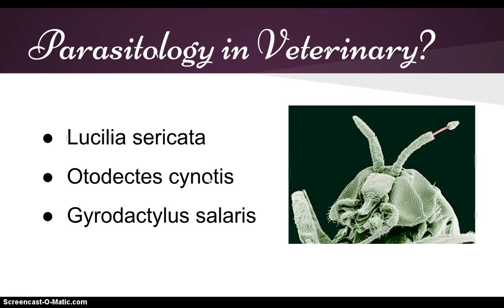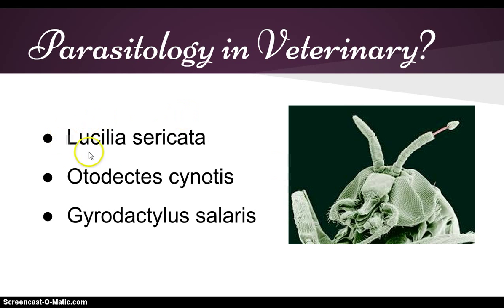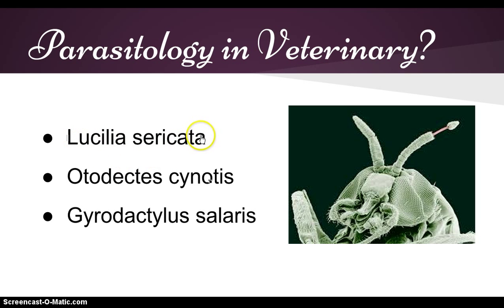The next topic is veterinary parasitology. This is the study of parasitology that causes economic losses in agricultural operations or which infects pets. For example, Lucila sericata, a blowfly, which lays eggs on the skin of farm animals. The maggots hatch and burrow into the flesh, distressing the animal and causing economic loss to the farmer.